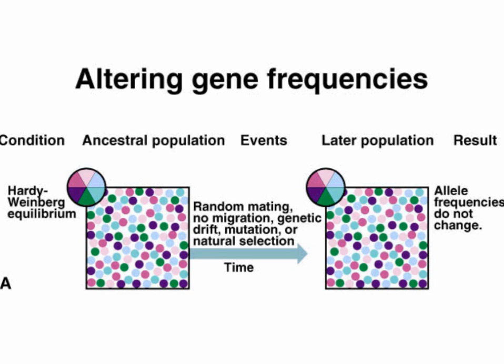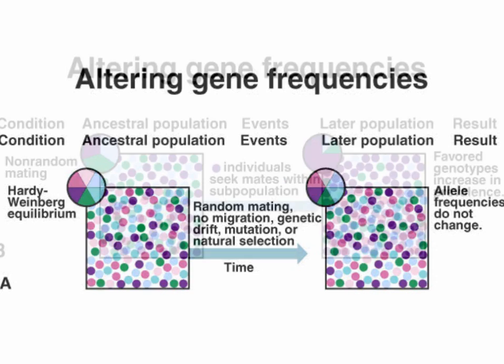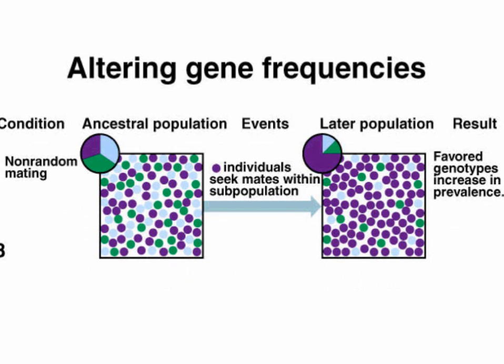If we assume random mating, no migration, no genetic drift or mutation, and no natural selection, then the allele frequency — as represented by the pie chart in the ancestral population — remains unchanged in later populations. Any change in allele frequency means there is a disruption in one of the Hardy-Weinberg factors. For example, with non-random mating: in the ancestral population we have an equal distribution of alleles, but if the purple alleles seek mates within the population, the number of purple individuals increases and those favored genotypes become more prevalent — the population is no longer in equilibrium.